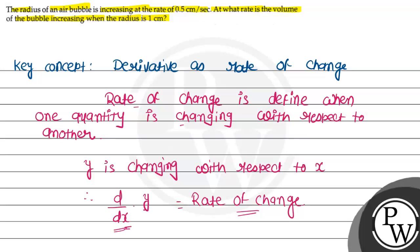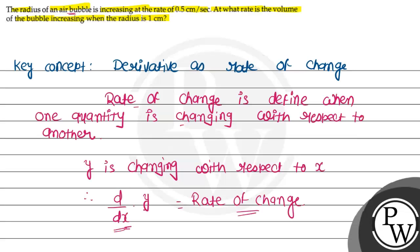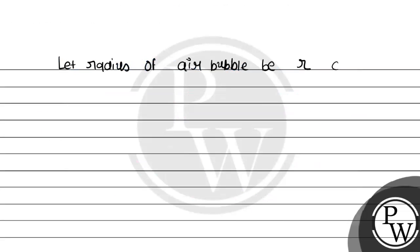Here, it is given that an air bubble, which is ultimately a sphere. So let's define the radius of the sphere. Let the radius of the air bubble be r cm.